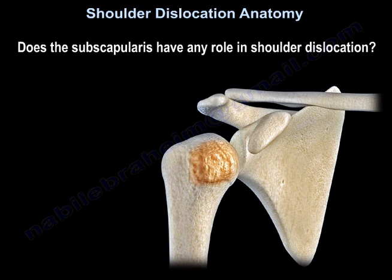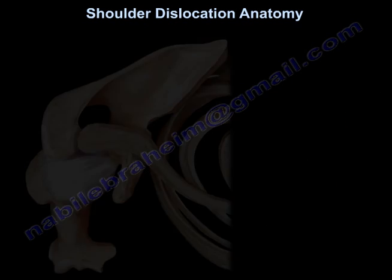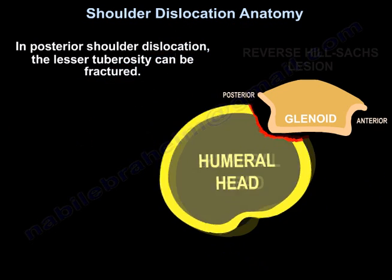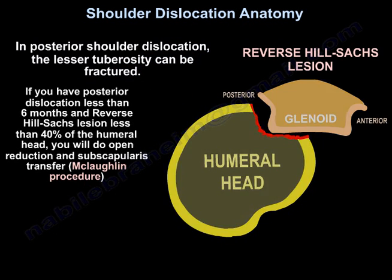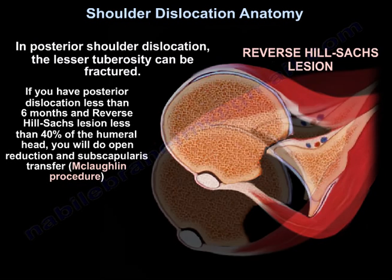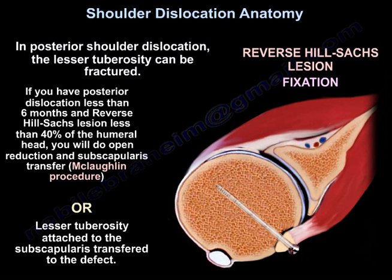Regarding the subscapularis and its role in shoulder dislocation: in posterior shoulder dislocation, the lesser tuberosity can be fractured. If you have posterior dislocation less than six months and the reverse Hill-Sachs lesion less than 40% of the humeral head, you will do open reduction and subscapularis transfer. They call it the McLaughlin procedure — the lesser tuberosity attached to the subscapularis is transferred to the defect.